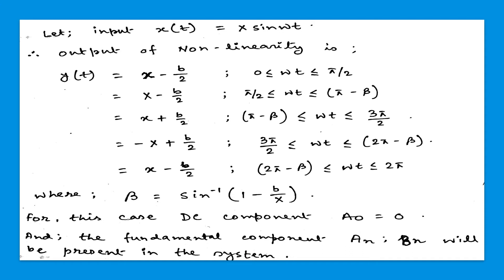In this equation we can see that the small x equals X sin(ωt) and capital X is the amplitude of that sinusoidal wave. And β is sin inverse of (1 minus B/X).